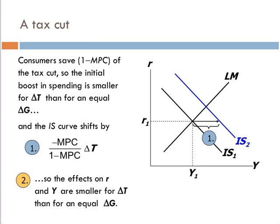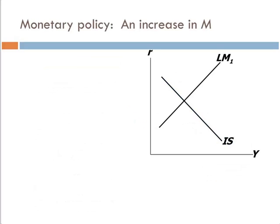So, the effects on R and Y are smaller for delta T than for an equal delta G. But, according to the IS curve, even though they're smaller, they are similar in nature. So, what happens? We have an increase in income, causing us to shift along the LM curve, which gives us an increase in interest rate, the real interest rate, which causes investment to come down just slightly, and so we give back some of that increase. So, income goes up. But, then we give some of it back because of the increase in interest rates.